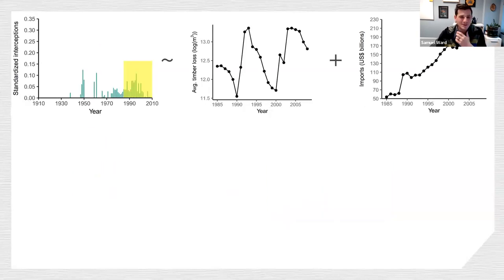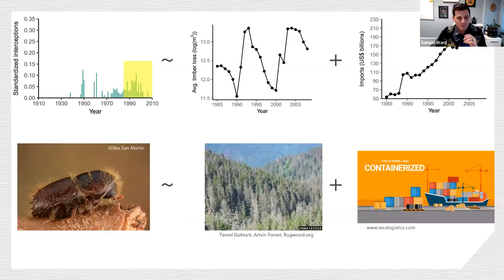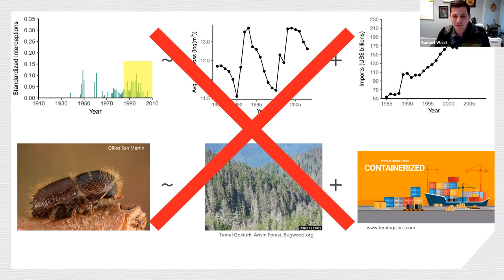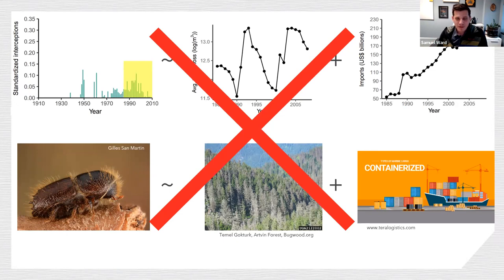We looked at the explanatory power of timber loss in central Europe and imports from central Europe to explain variation in interception rates — essentially, if there's an outbreak or higher imports, do we get more Ips typographus interceptions? Unfortunately, there was nothing that even remotely resembled a signal that these things correspond to each other. You can't use changes in import volumes or outbreaks to infer anything about the risk of invasion for this individual species.